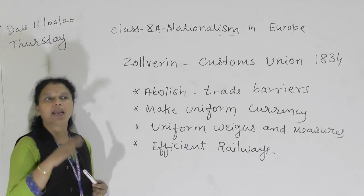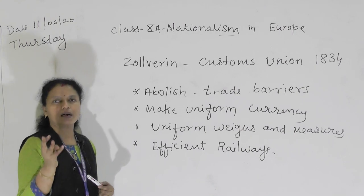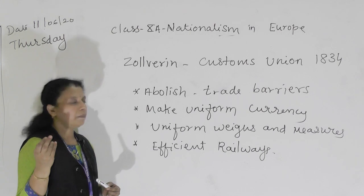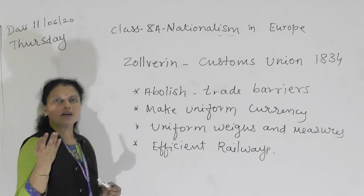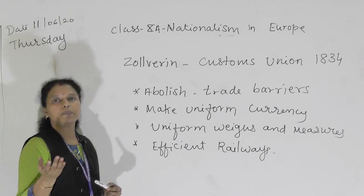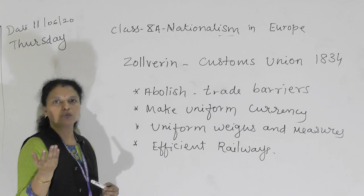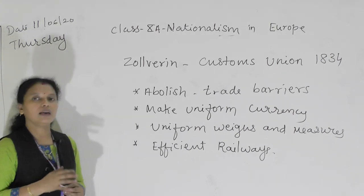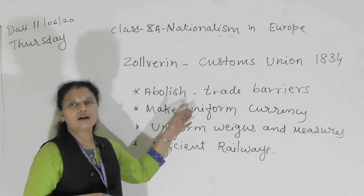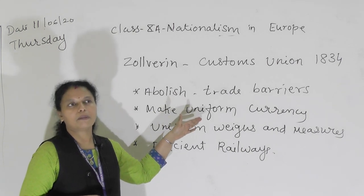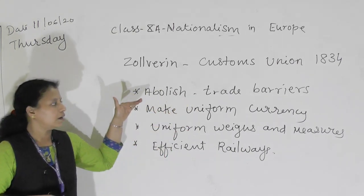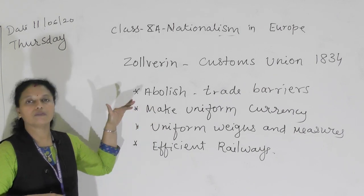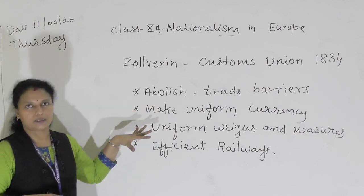Liberalism had mainly three important aspects. First, the middle class — the right to freedom and equality before the law. Second, political liberalism — the freedom and right to vote for men and women. Third, economic liberalism — no trade barriers, uniform weights and measures, and uniform currencies.